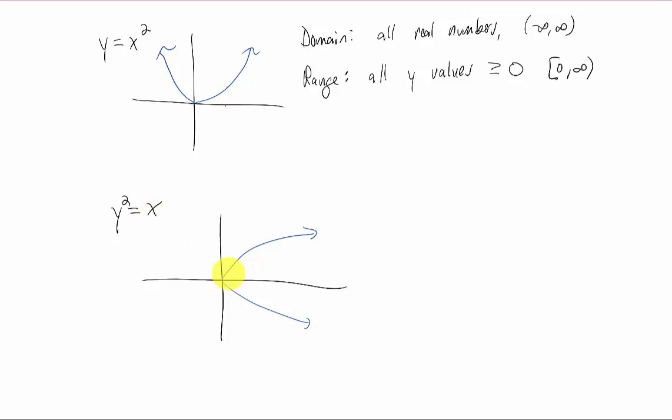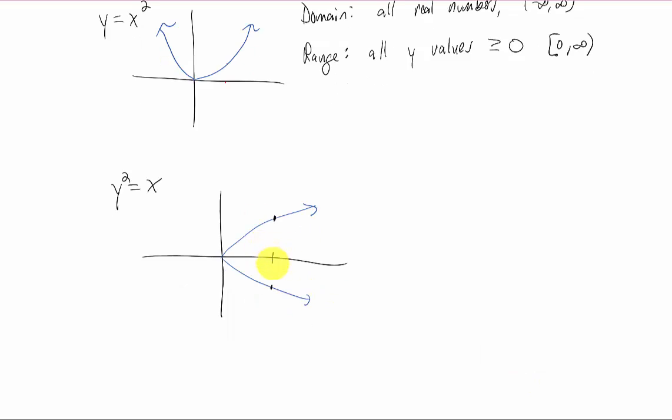Y squared equals x is a parabola turned on its side. What I want to point out here is that this is actually not a function. If we pick some x value to plug into this relationship, we actually get two y values out over here. So x is an input, and our relationship is outputting more than one value. So this is not a function.